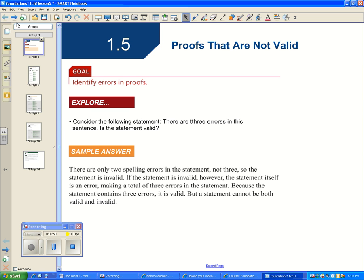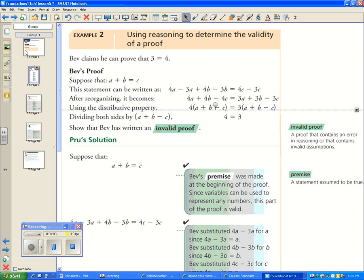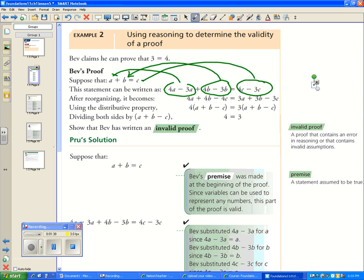So that was confusing - there's this statement that is both valid and invalid at the same time. Let's move on to proofs. Bev claims he can prove that three equals four. He said, let's suppose that a plus b equals c. This statement can be written as 4a minus 3a, so this entire statement is the same thing as a. 4b minus 3b, that's the same thing as just b, equals 4c minus 3c, and again that is c.